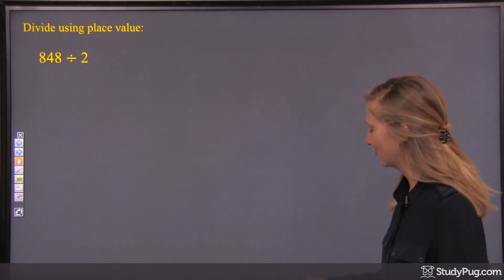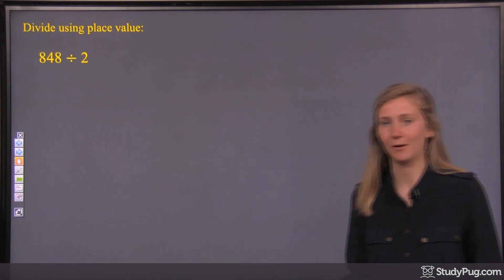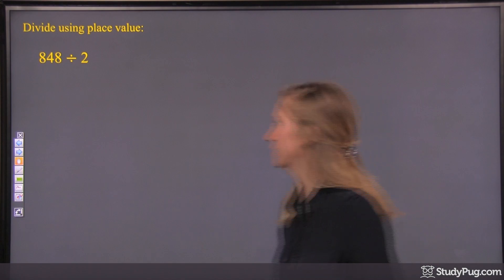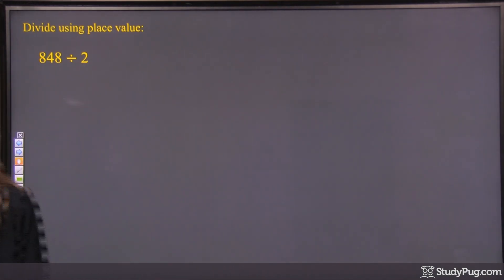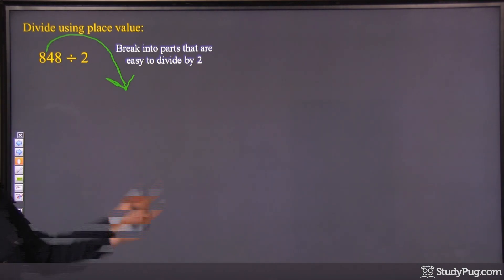I'm using place value. 848 divided by 2. Now we've got this three-digit number, but it doesn't change how we do the dividing by place value. We're going to break apart the 848 into parts that we know how to divide by 2.